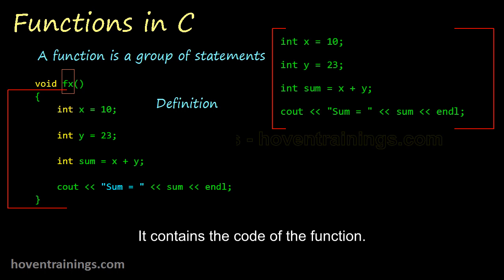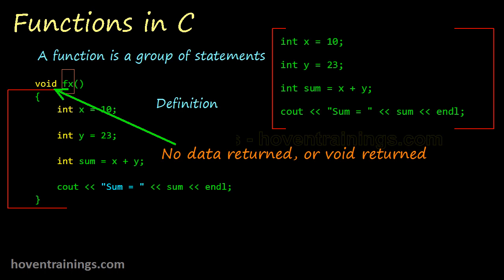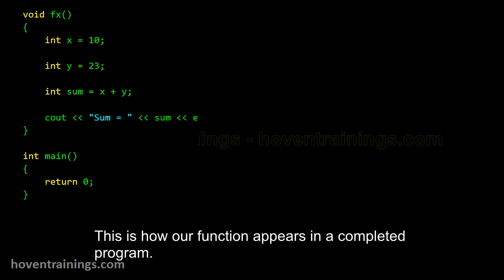The body is also called the function definition. It contains the code of the function. The void keyword means that this function doesn't return anything. Void means nothing. This is how our function appears in a completed program.